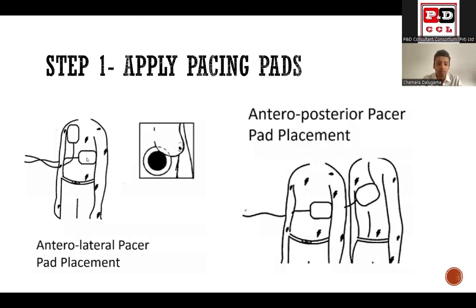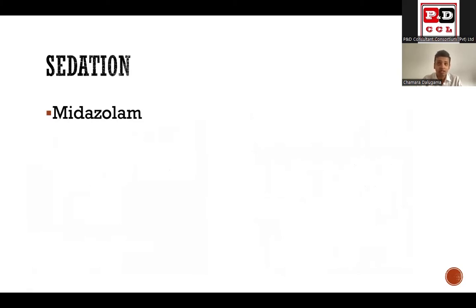In transcutaneous pacing, the most important thing is to apply the pacing pads of the defibrillator appropriately. You can go for an anterolateral pad placement, where you apply the two pads - one just lateral to the sternum and one at the apical area. Or you can go for anteroposterior pad placement, which is technically more difficult but gives better pacing compared to anterolateral. Since this involves giving electrical shocks - perhaps 60 to 70 times per minute - if the patient is conscious, you need to provide generous sedation, such as midazolam.